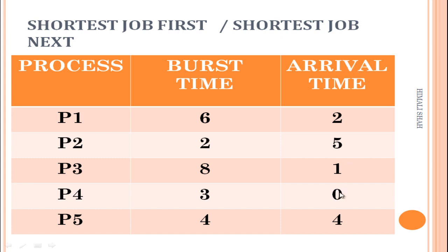The minimum arrival time belongs to P4, which means P4 arrives first. We continue with P4: arrival time 0, burst time 3. So its execution continues up to 3 units of time.